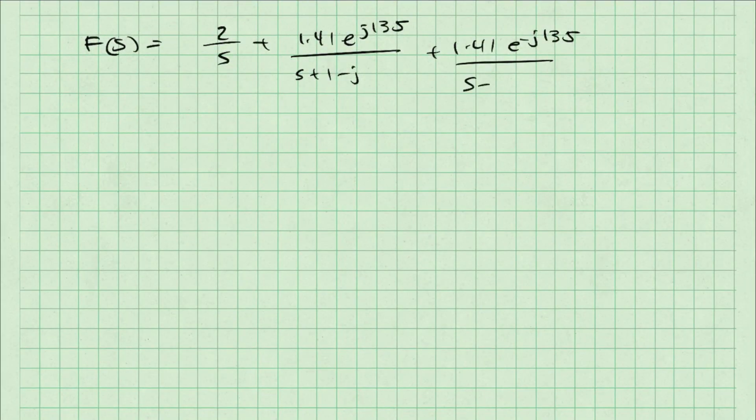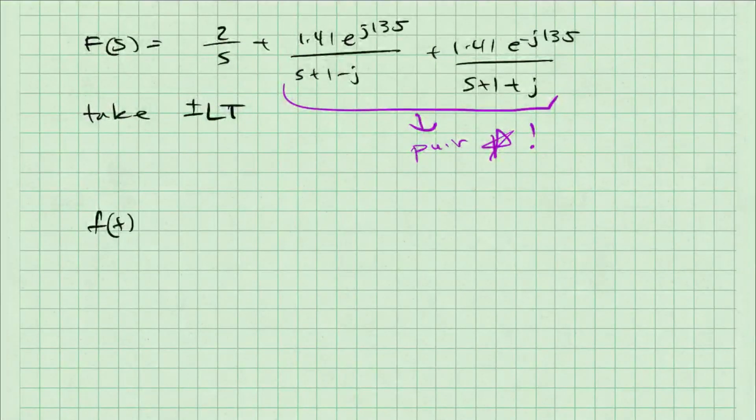Now, f of s looks like 2 over s plus 1.41 e to the j 135 over s plus 1 minus j plus 1.41 e to the minus j 135 over s plus 1 plus j. The second two fractions here, fractions 2 and 3 in this form, are the exact same thing as pair star that I discussed at the beginning of this video.